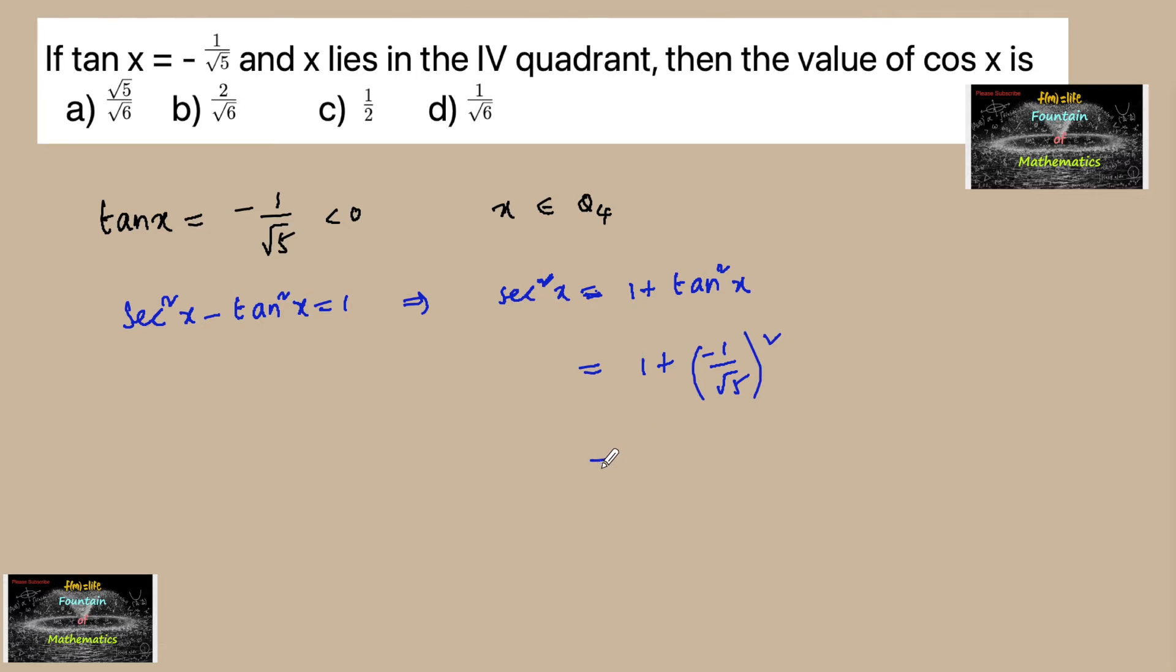whole square, which equals 1 plus 1 upon 5, so this is 6 upon 5. So sec²x = 6 upon 5, or else sec x is equal to